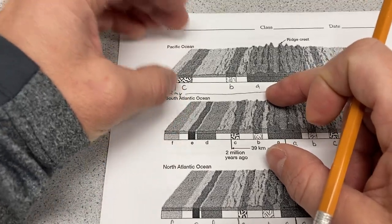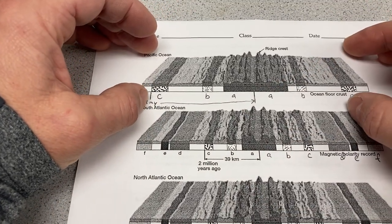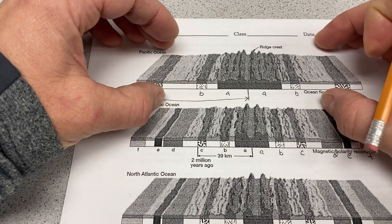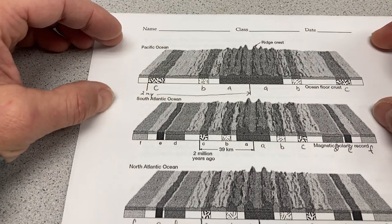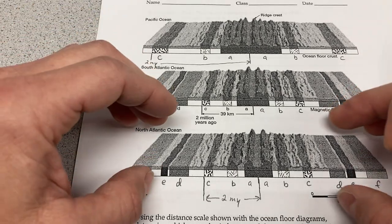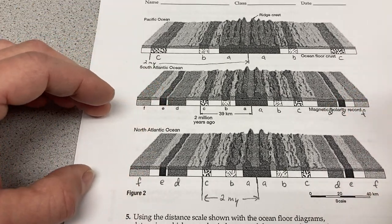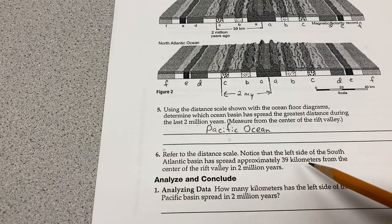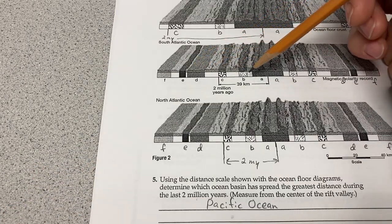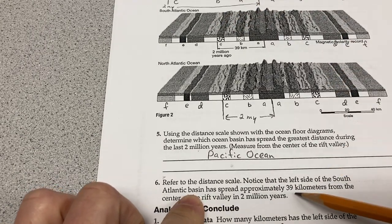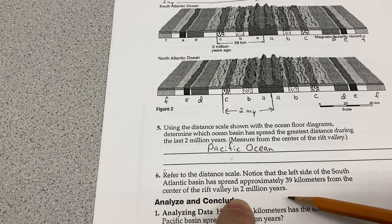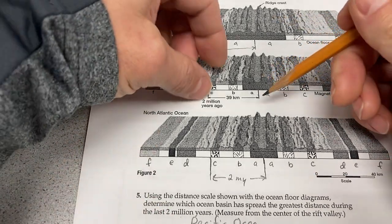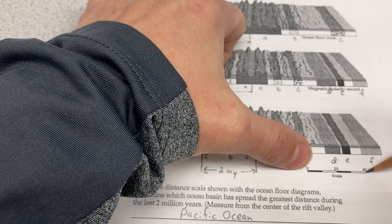Say there's a continent attached on either side of the Pacific and another pair on either side of the Atlantic. The speed at which those Pacific continents appear to be moving across the surface of the Earth away from each other is going to be a lot faster than the Atlantic continents. The South Atlantic Basin has spread approximately 39 kilometers from the center of the Rift Valley in 2 million years. From the center to the edge of the labeled section compared to our scale is almost exactly 40 kilometers, so we'll be making these measurements in a moment.